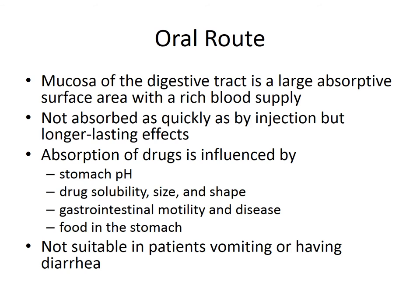The oral route is probably the most familiar to most people — pills, liquids, that kind of thing. The mucosa of the digestive tract is a large absorptive surface area with a lot of blood supply, which is what our digestive tract is designed to do. Anything given orally is not absorbed as quickly as by injection, but the effects tend to be longer lasting, so that's a trade-off. The absorption of drugs in the GI tract is influenced by stomach pH, drug solubility, size, shape, the patient's gastrointestinal motility, what disease we're treating, and whether there's food in the stomach.